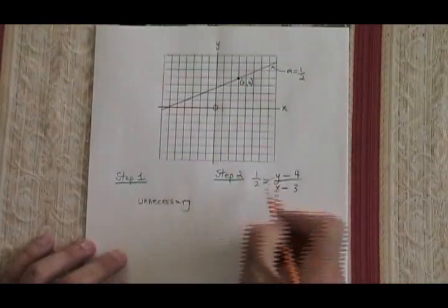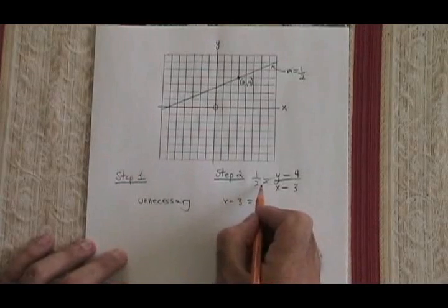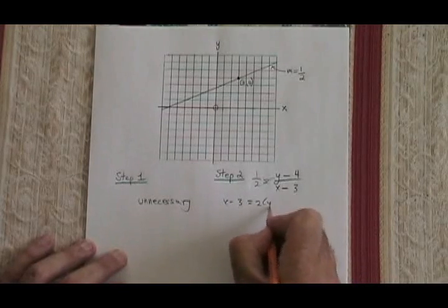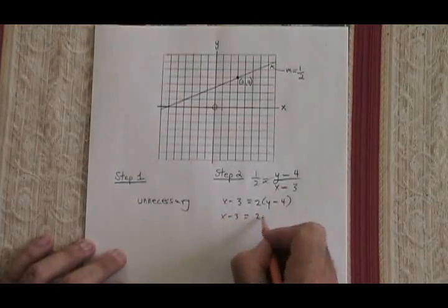And now I'm cross-multiplying. Top times bottom gives x minus 3 equals. Bottom times top gives 2 times y minus 4. x minus 3 therefore is equal to 2y minus 8.